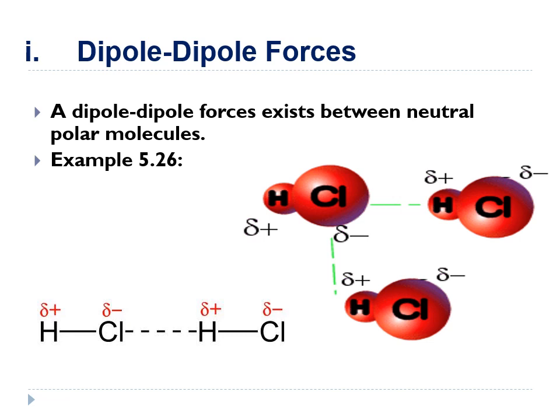Dipole-dipole forces exist between neutral polar molecules — for example, in figure 5.26, the HCl molecule. You can see there are two molecules of HCl in a linear arrangement. The electropositive part is at the hydrogen atom and the electronegative part is at the chlorine atom. The dotted lines represent the dipole-dipole forces.